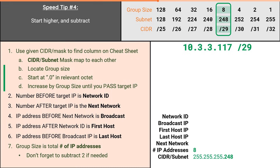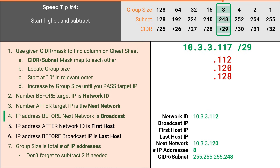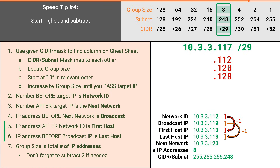Our final speed tip is that you can start higher, then subtract by the group size. If we know we will land on .128, we can start there, then decrement by the group size giving us .120. We can continue to do that until we pass the target IP. The next decrement would be .112, and here we found the block of 8 IP addresses which includes our target IP. Once we've found the block, we can solve everything else just like normal. The number lower than our target IP is the network ID, the number higher is the next network, the IP before that is the broadcast IP, and the numbers immediately before and after the network ID and broadcast are our first and last host. Our last speed tip is that you can start higher than the target IP and decrement by the group size until you find the specific group size increment that contains your target IP.